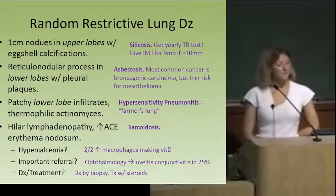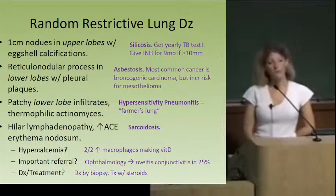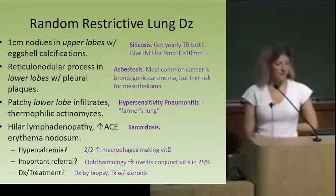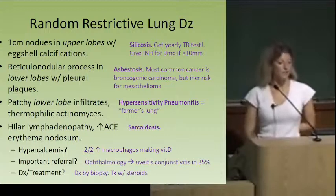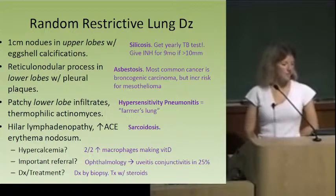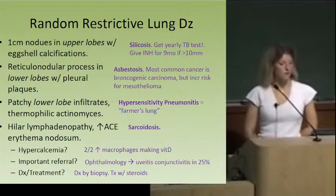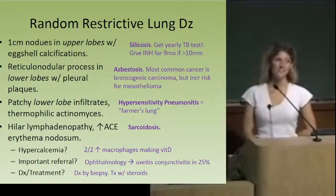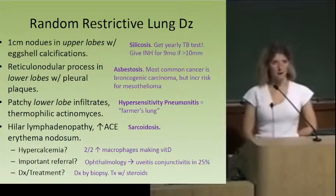If the vignette describes reticular nodular markings in the lower lobes and pleural plaques, that's asbestosis — higher risk for bronchogenic carcinoma and mesothelioma. If the lesion is a patchy lower lobe infiltrate and you can culture thermophilic actinomyces, that's hypersensitivity pneumonitis, more commonly known as farmer's lung.